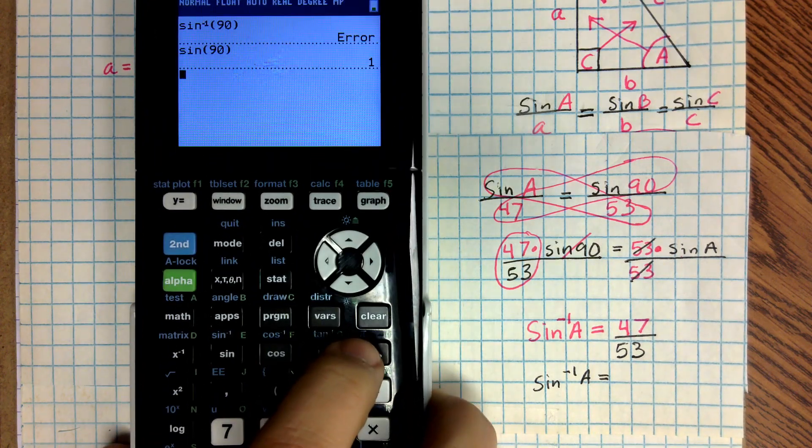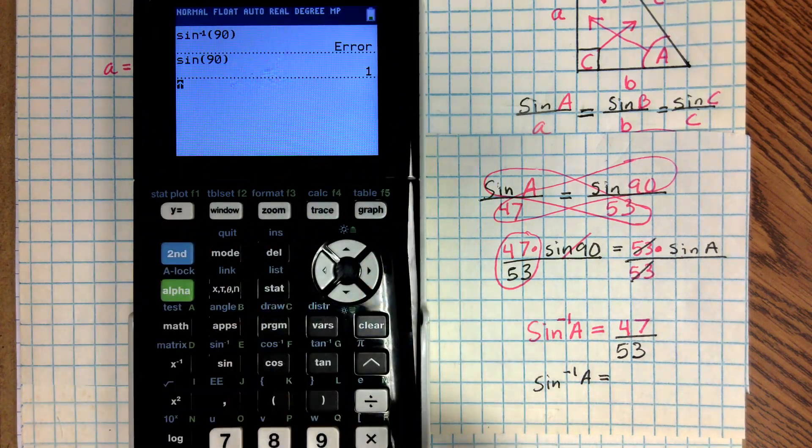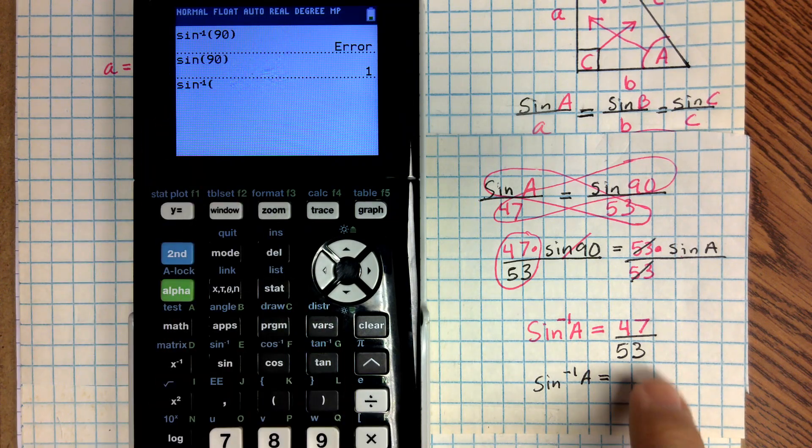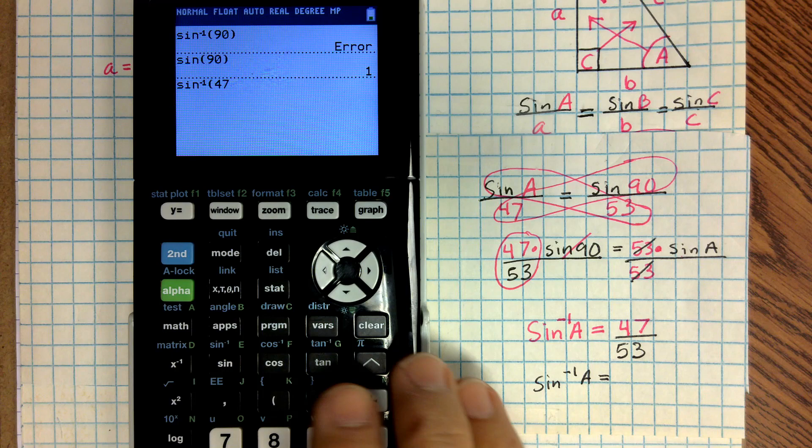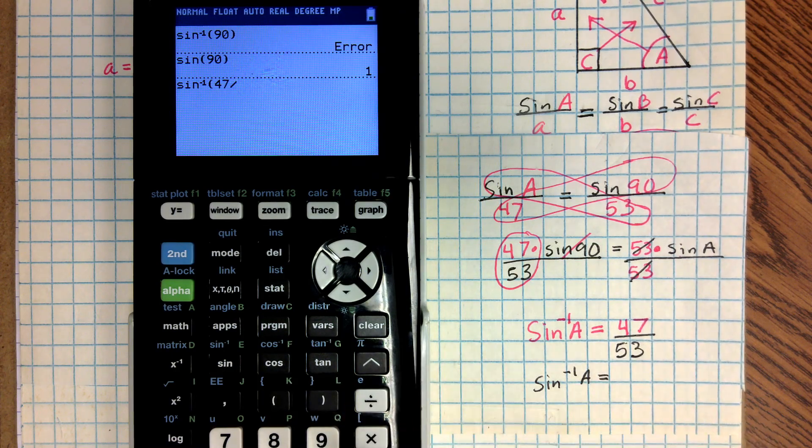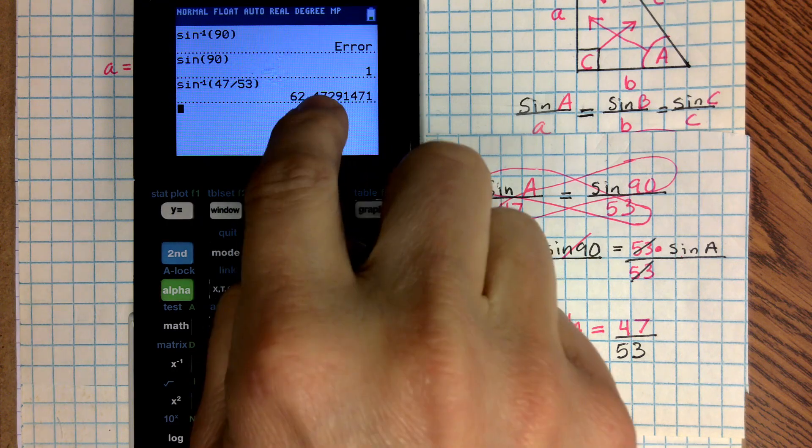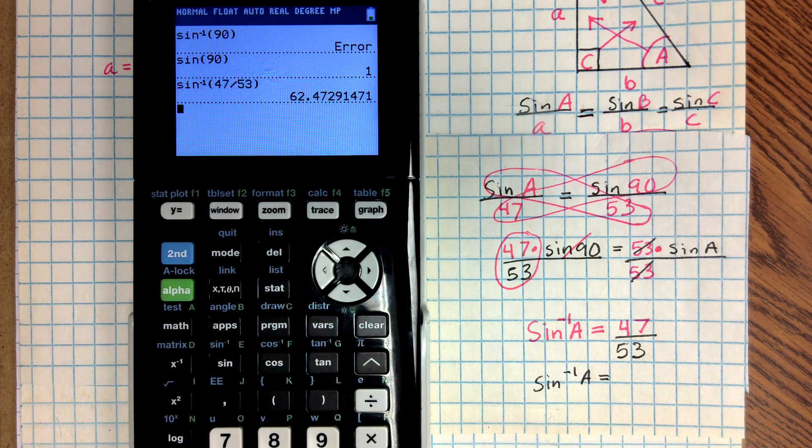So to do that, to type that in, we first want to hit second, and then we want to hit the word sine. Notice it gives me inverse sine. And then I'm going to go ahead and type in this ratio, 47 divided by 53. And I'm going to hit enter, and it tells me it's 62.472.